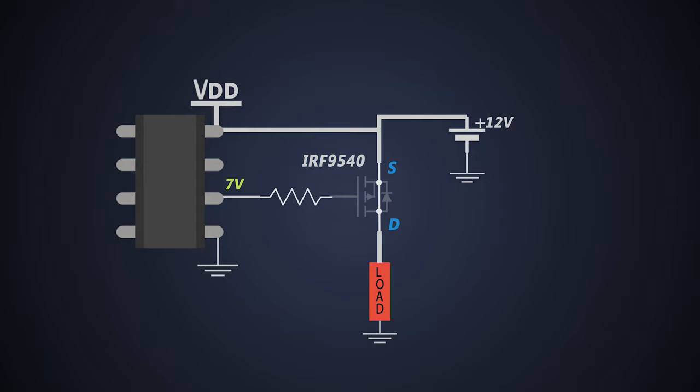Well, instead of providing 7 volts at the MOSFET gate, we can pull the gate to the ground. In that case, the VGS would be minus 12 volts. So the MOSFET will turn on and its current carrying capacity would be better.